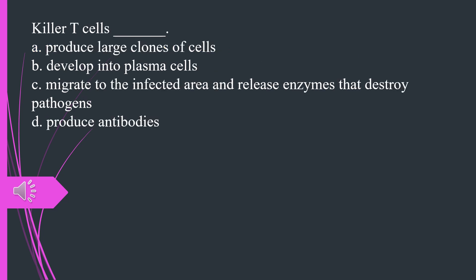Killer T cells A. Produce large clones of cells B. Develop into plasma cells C. Migrate to the infected area and release enzymes that destroy pathogens D. Produce antibodies. The answer is C, migrate to the infected area and release enzymes that destroy pathogens.